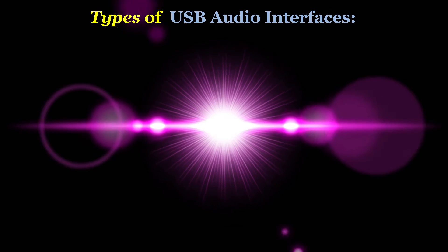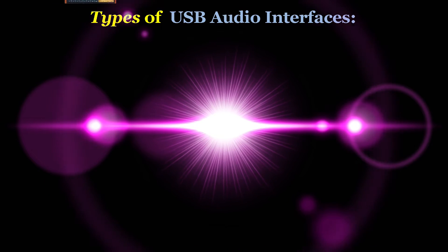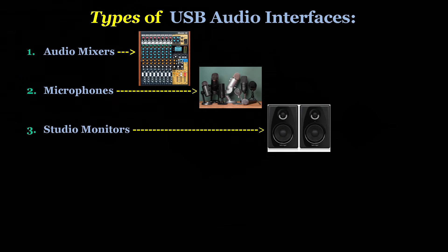Now we'll check out the different types of audio devices that include USB audio interfaces. The first is an audio mixer — USB audio interfaces can be integrated into audio mixers to provide high-quality recording and playback capabilities. Number two: microphones. Some microphones come with built-in USB audio interfaces which allows them to be directly connected to your PC without requiring additional hardware. Number three: studio monitors. Some studio monitors have built-in USB audio interfaces which allows them to be directly connected to your computer for professional audio output.